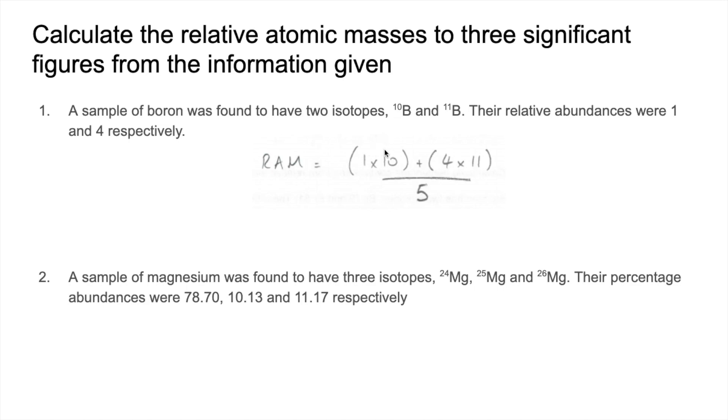So it's one times 10 plus four times this 11. And we divide that by the total abundance. So obviously the total abundance is the four plus the one, and that's where that five comes from. And so to three significant figures, that comes out at 10.8.